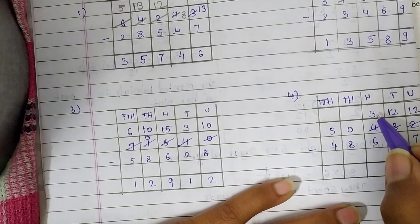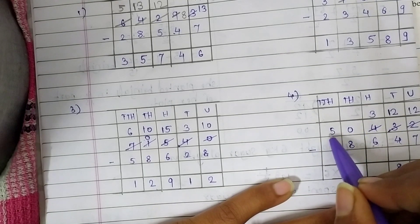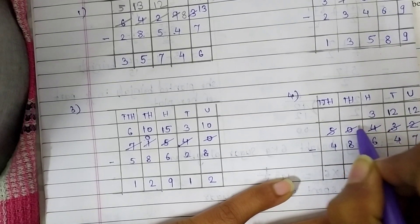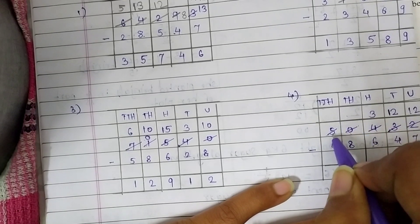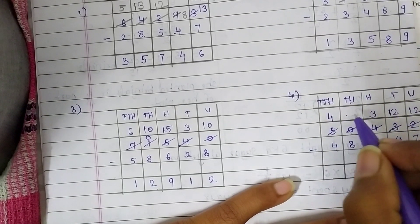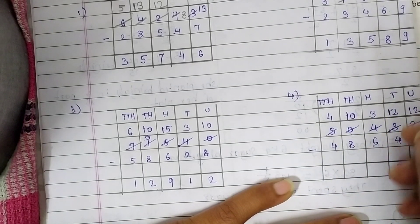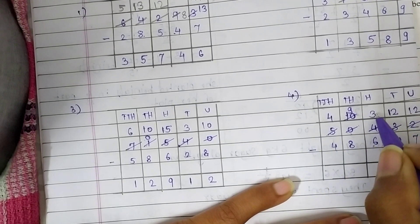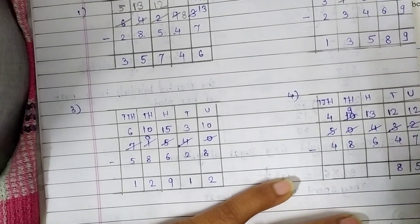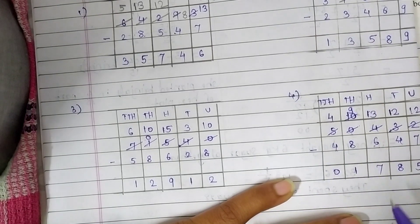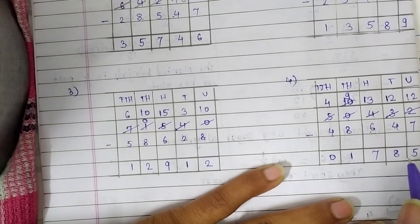Here we are also getting from 10,000 — here it's 0 — so when we get 1 from 5 ten-thousands it becomes 4 ten-thousands, and here it becomes 10,000. Now while taking 1 from that 10,000 it becomes 9 and here we get 13 hundreds. So 13 minus 6 is 7, 9 minus 8 is 1, and 4 minus 4 is 0. The answer for the 4th question is 1,785.